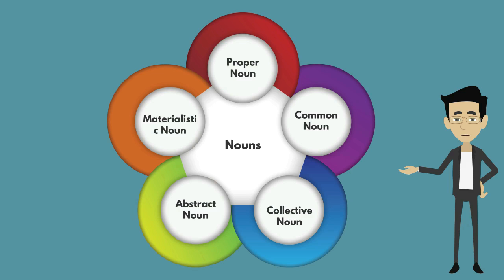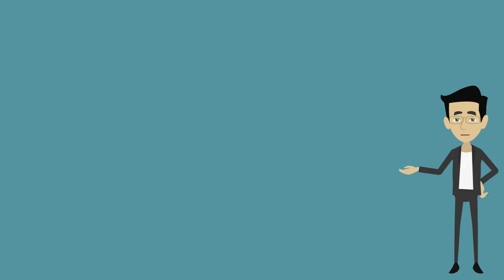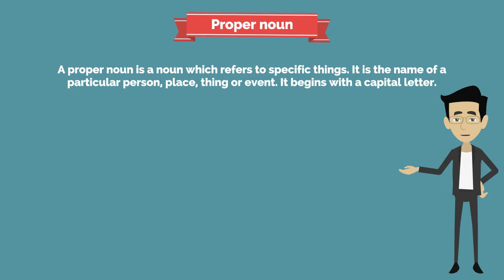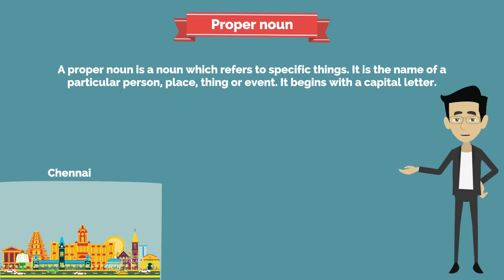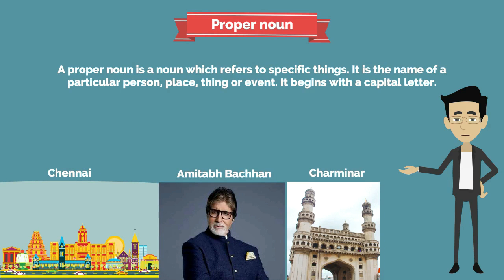The first type is the proper noun. A proper noun is a noun which refers to specific things — the name of a particular person, place, thing, or event. It begins with a capital letter. Examples: Chennai, Amitabh Bachchan, Charminar, and so on.